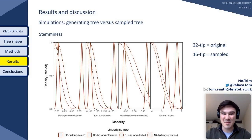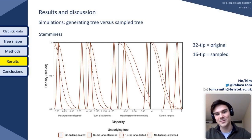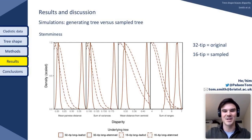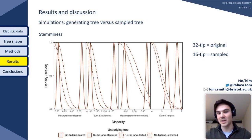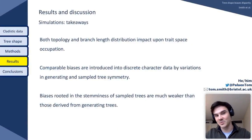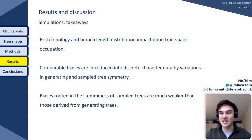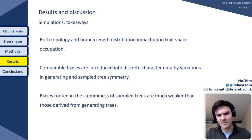Whilst we were able to replicate the relationship somewhat through polarity, the magnitude of the relationship observed when the difference lay in the generating tree was not replicable. This suggests that whilst there are clearly impacts of differences in topology and branching distribution on trait space occupation in the generating tree, the only bias that can really be introduced in a meaningful way under subsampling is that derived from topology.